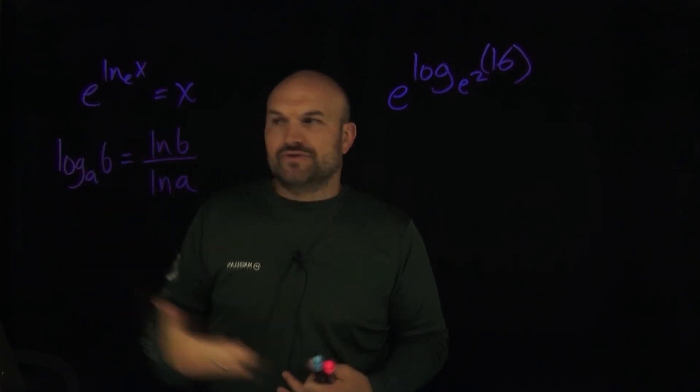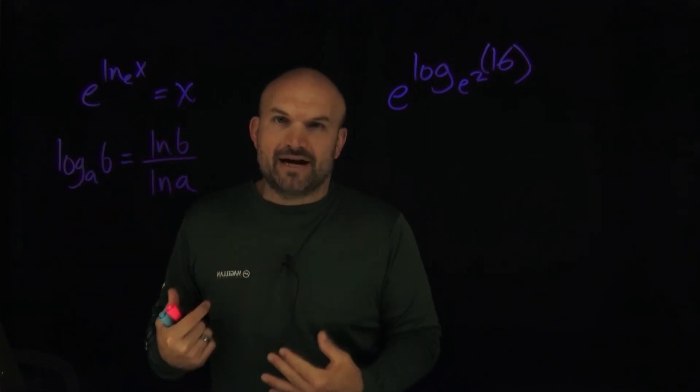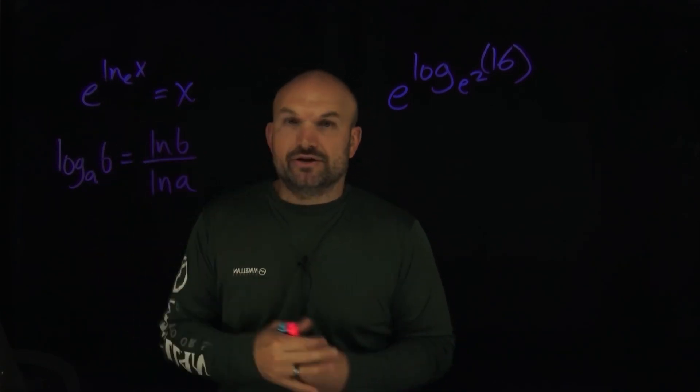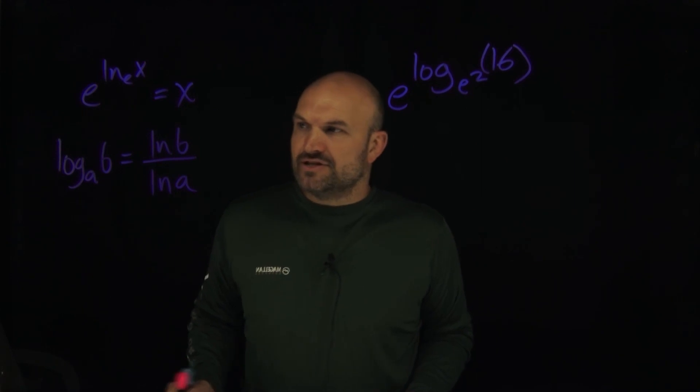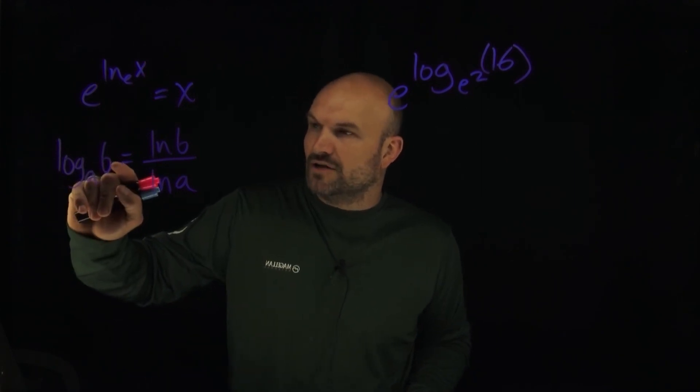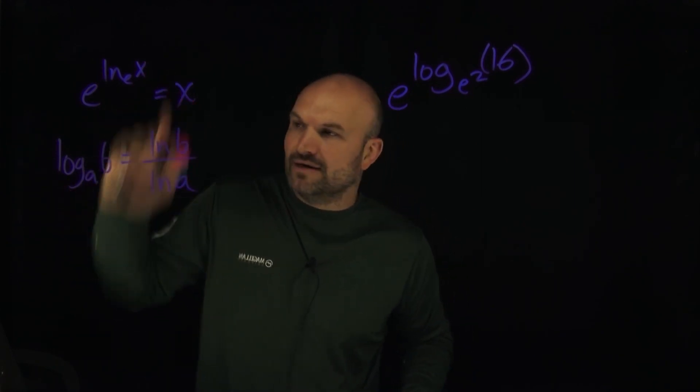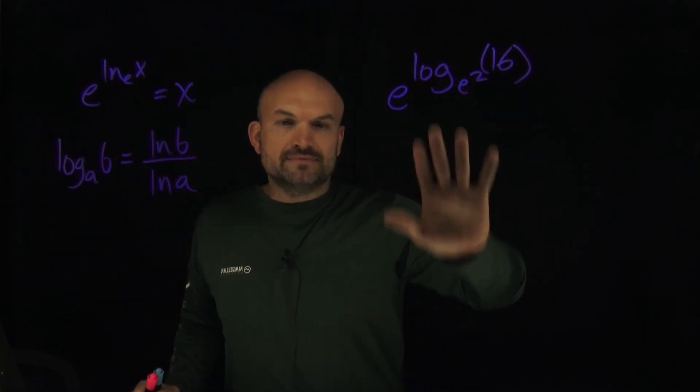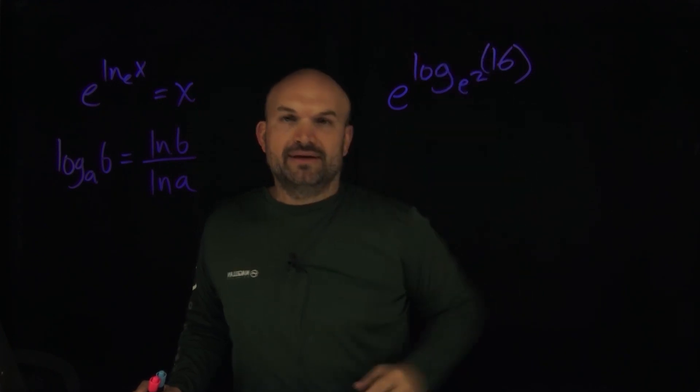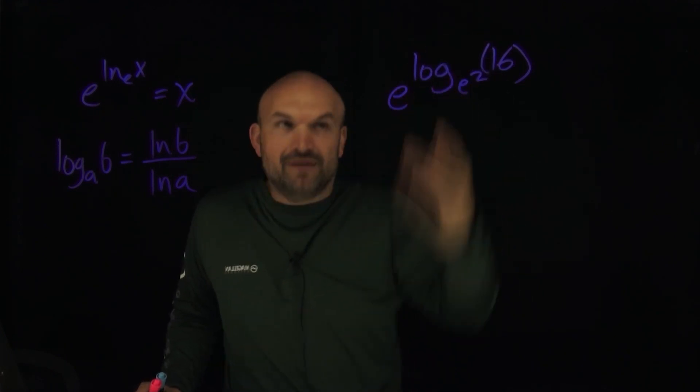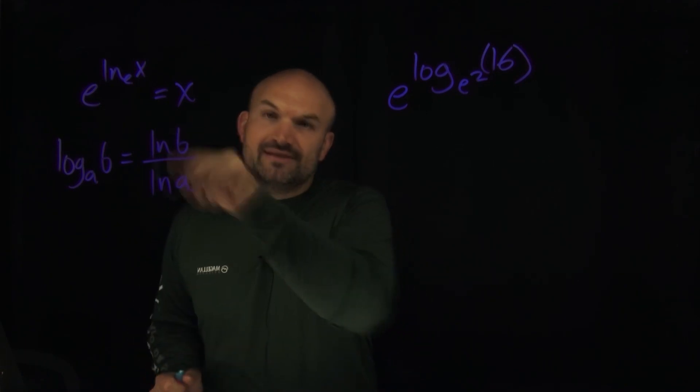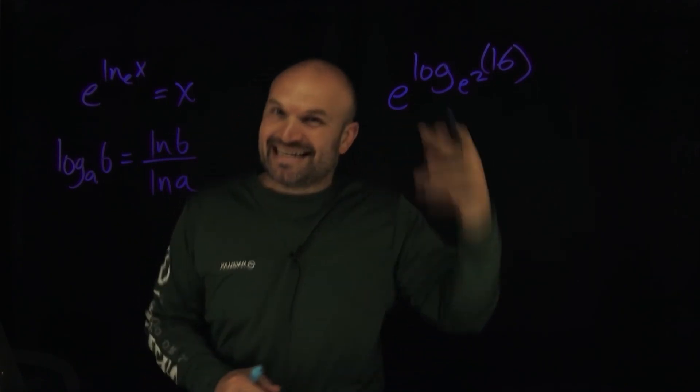Now, I just prefer to use the natural logarithm because the change of base formula does not matter if you're using log base 10, log base 5, or log base e, which would be your natural logarithm in this case. So all we do is we just take the argument of our logarithm, we take the natural log in the numerator, and then we take the base of our logarithm, we take the natural log of that in the denominator.